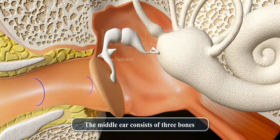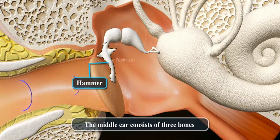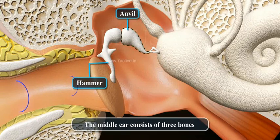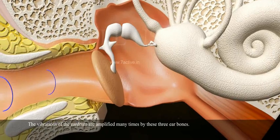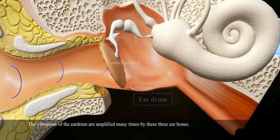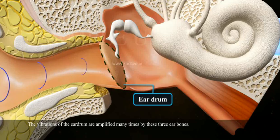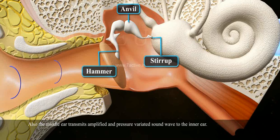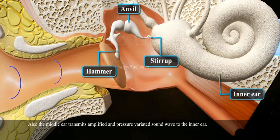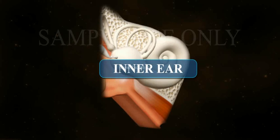The middle ear consists of three bones: one, hammer; two, anvil; three, stirrup. The vibrations of the eardrum are amplified many times by these three ear bones. The middle ear also transmits amplified and pressure-varied sound waves to the inner ear.